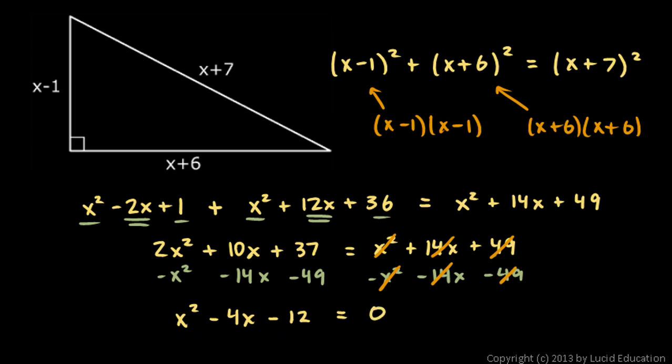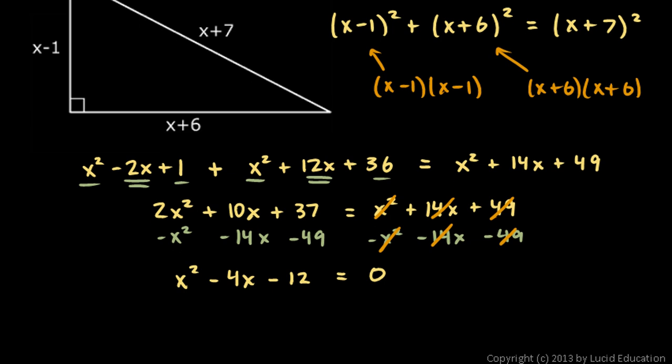And now we could use the quadratic formula or this sort of thing is easier if it factors easily. And this one does factor pretty easily. This factors as, let's see, it'll be x plus something, x minus something. And we need two factors that will multiply to give us a negative 12 and add up to negative 4. So this will work if I do x minus 6 and x plus 2. And you can check that with the FOIL. That gives us x squared minus 6x plus 2x. That works out to minus 4x. And then 2 times negative 6 is negative 12. So that's good right there.